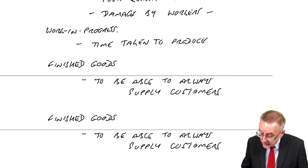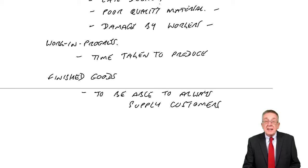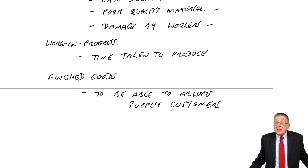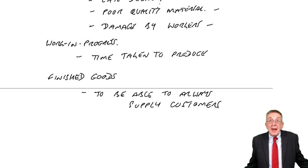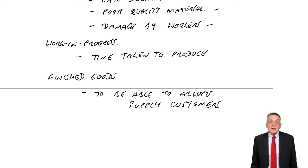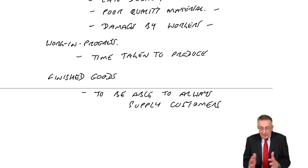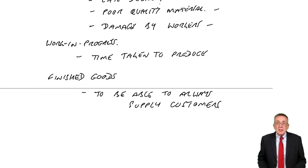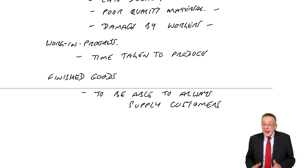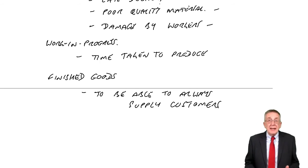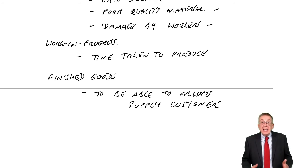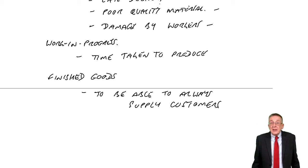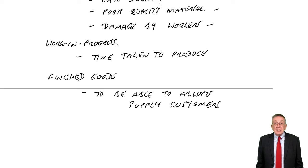Now what about work in progress? It's inevitable — if something takes a month to make you're bound to have work in progress. How do we get rid of that? Speed of production. Surely the faster we produce, the less work in progress there will automatically be, and it's saving us money as well. Obviously we want our workers to work faster — it's a benefit on its own.